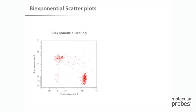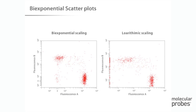Many of the plots shown in this tutorial use what is called a bi-exponential scale. This scale transitions from logarithmic scaling at the upper end to linear scaling at the lower end. Bi-exponential plots have become more common with the growing number of digital flow cytometers that have electronics which might assign fluorescence values that are below zero. These data may not display properly using standard logarithmic scaling, although calculated statistics will be correct.